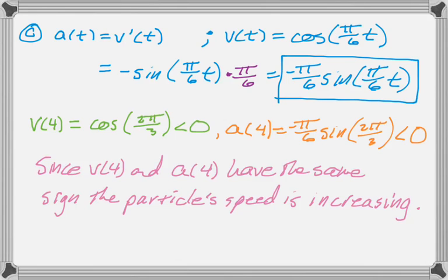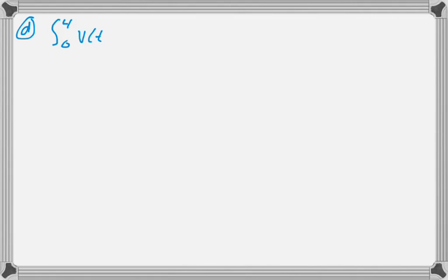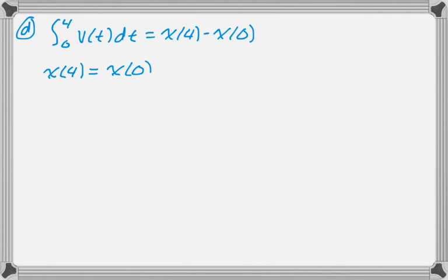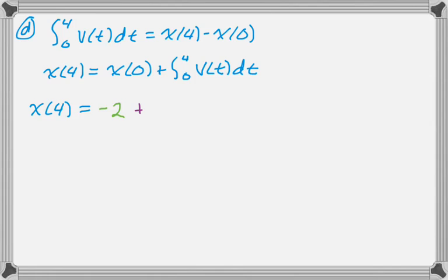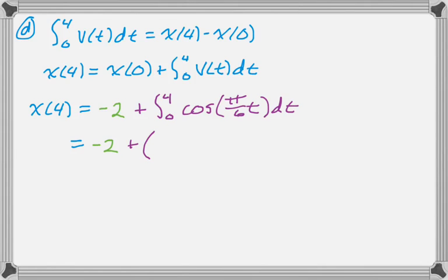The final part is to find the position at t = 4. We know that integrating velocity from 0 to 4 gives x(4) minus x(0), which is the displacement. So we can rearrange to get x(4) = x(0) + the integral from 0 to 4 of v(t) dt. We're given that x(0) = −2, so don't forget that. Now I replace v(t) with the actual function and keep going: negative 2 plus the integral.